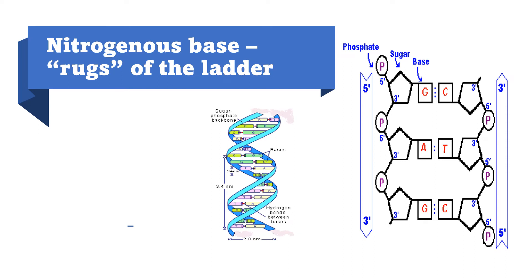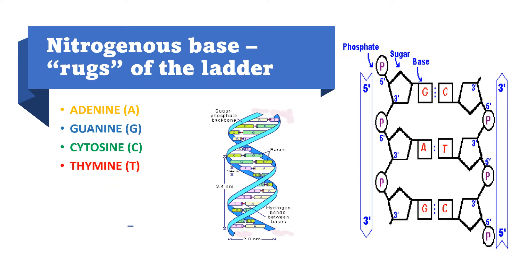Nitrogenous bases are called the rungs of the ladder because they are arranged inward from each strand. There are four types of nitrogenous bases in DNA: adenine, guanine, cytosine, and thymine. Adenine always bonds with thymine by 2 hydrogen bonds, and guanine always bonds with cytosine by 3 hydrogen bonds. This is very important to remember.